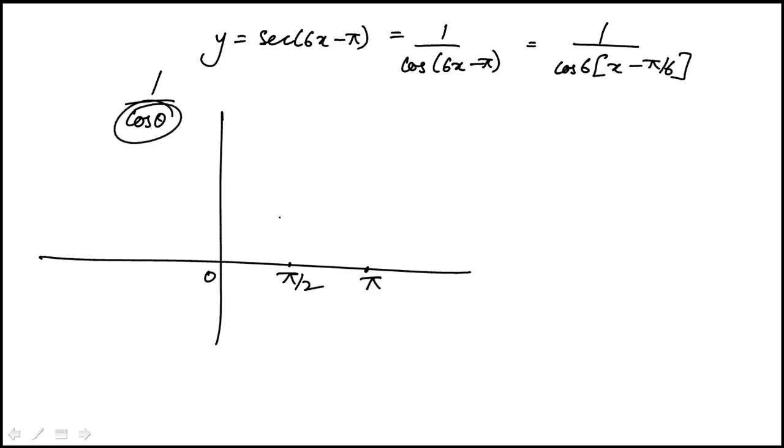Cosine theta goes to 0. So if you draw this out, it's going to look something like that. It's going to go up to plus infinity. Now here, it's going to be negative, so it's going to look something like that. And then again, it keeps recurring.